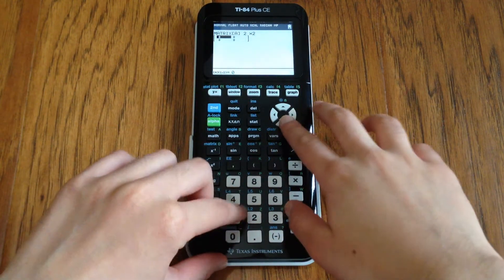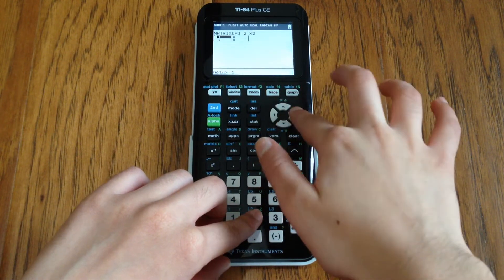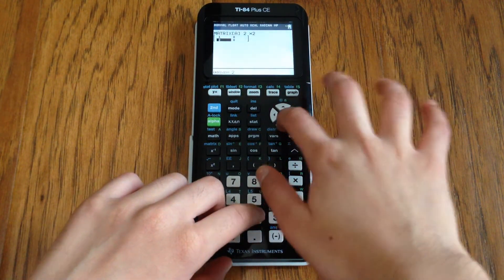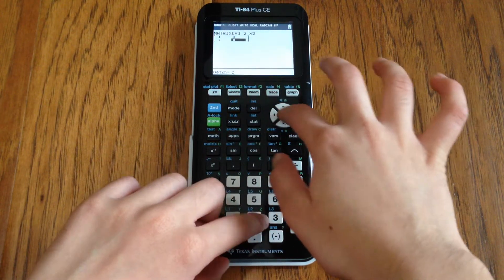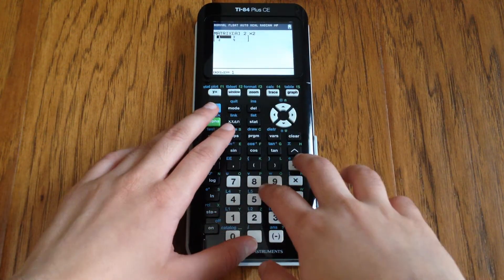Once it's here we can enter random numbers. I'm just going to do 1, 2, 3, 4, and we have this matrix.